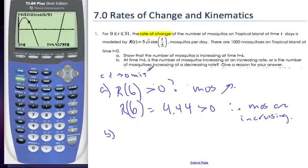The B part then says, at time t equals 6, is the number of mosquitoes increasing at an increasing rate? Or is the number of mosquitoes increasing at a decreasing rate? Well, we know they're increasing. But is that rate of increase itself increasing or decreasing?